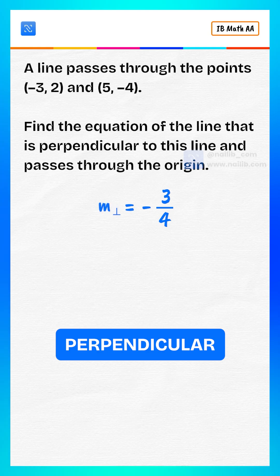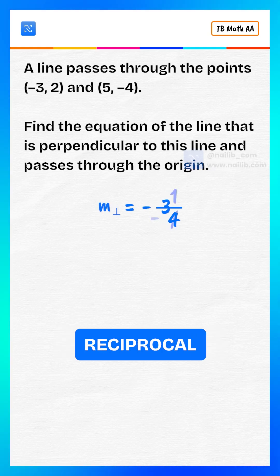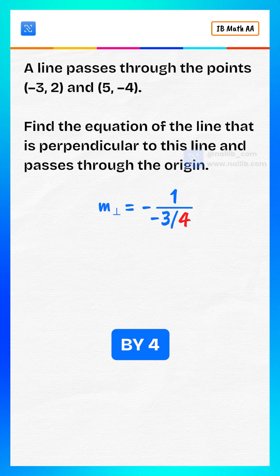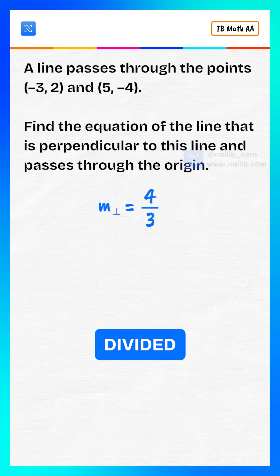Now, the perpendicular slope is the negative reciprocal of negative 3 divided by 4, which equals 4 divided by 3.